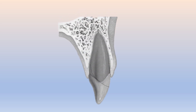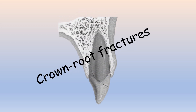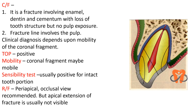Crown and root fractures are those which extend from the crown up to the root surface. The clinical features can be of two types. For uncomplicated crown fractures, there will be involvement of enamel, dentine, and cementum without any pulp exposure. However, in the complicated fracture type, there is involvement of enamel, dentine, pulp, and cementum — meaning the fracture line extends through the pulp.